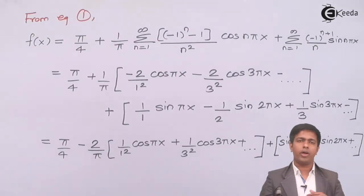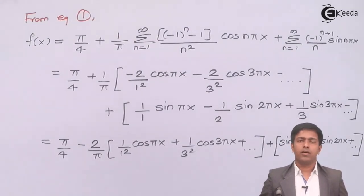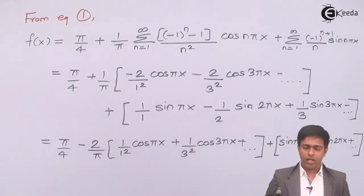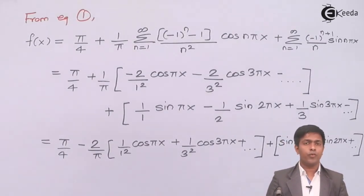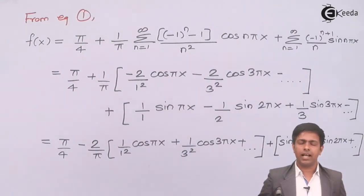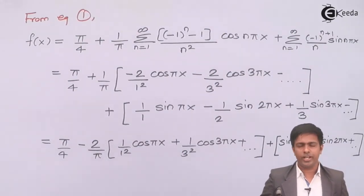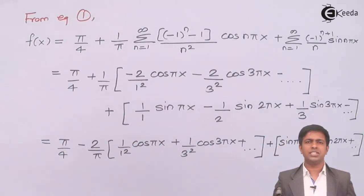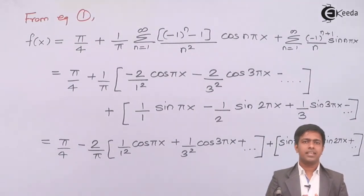This completes the Fourier series derivation for the function f(x) = pi*x (for 0 to 1) and 0 (for 1 to 2). If you want to learn more videos on engineering mathematics and Fourier series, visit twigila.com, where you can find all engineering subjects including engineering mathematics in one place.